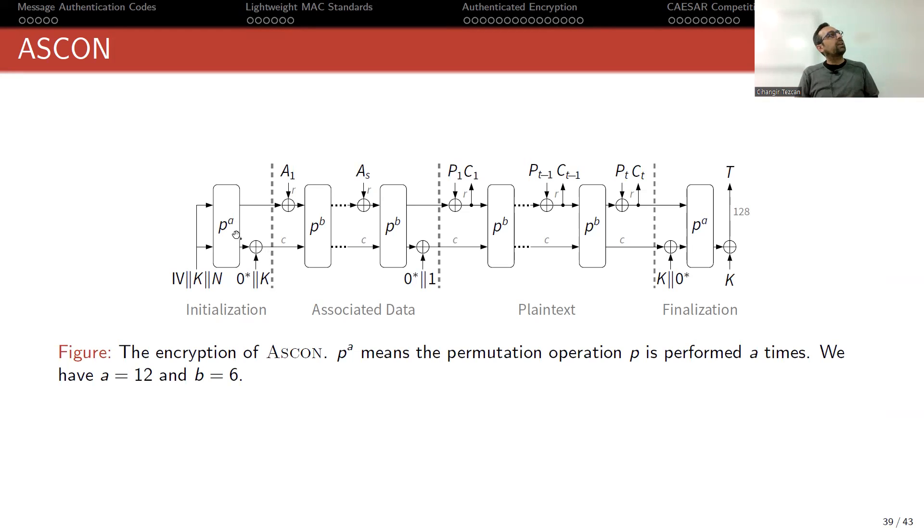Let me show you the big picture where there's a permutation P which is applied many times. Then I will show what is inside that P. So I told you that the internal state is 320 bits, which is fed into this permutation. Initially you fill that 320 bits with a 64-bit IV, 128 with secret key, and 128 with nonce.